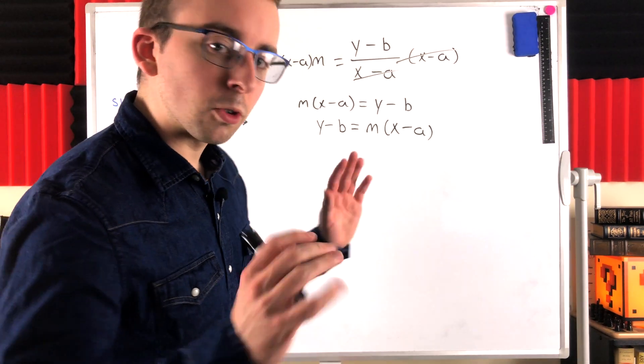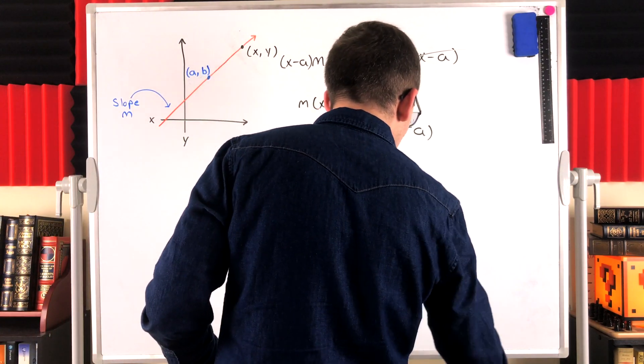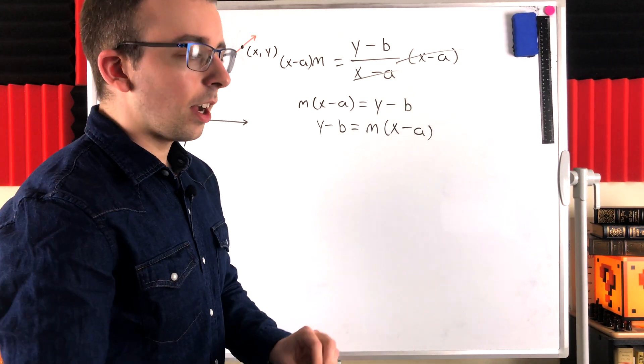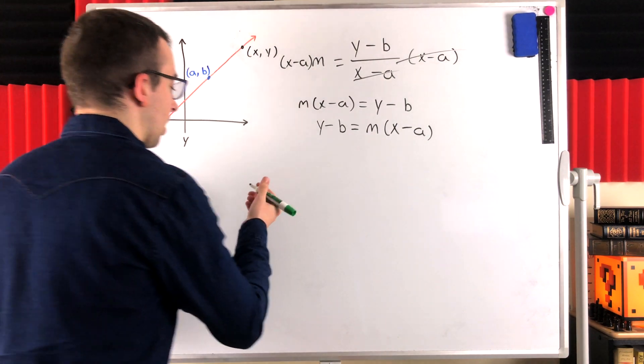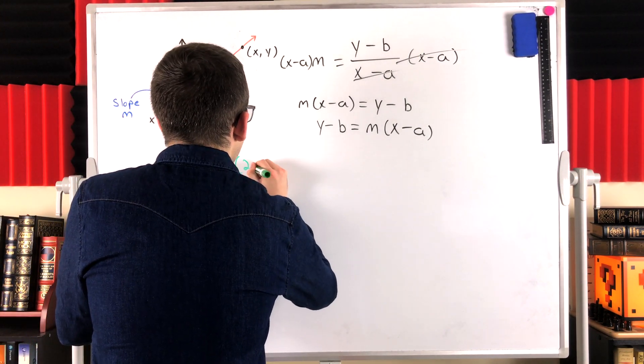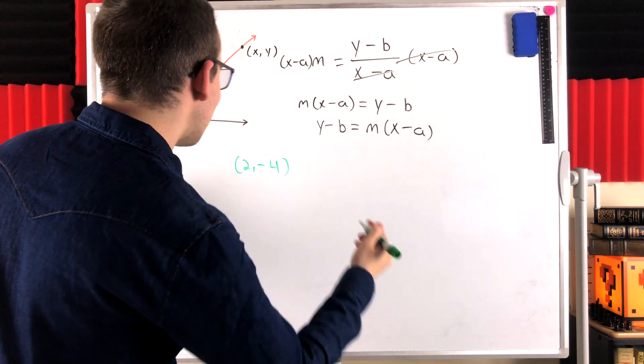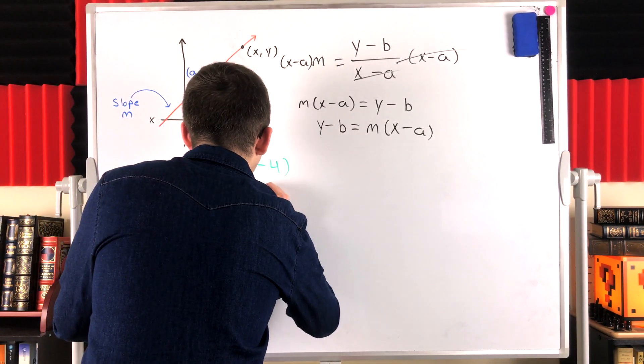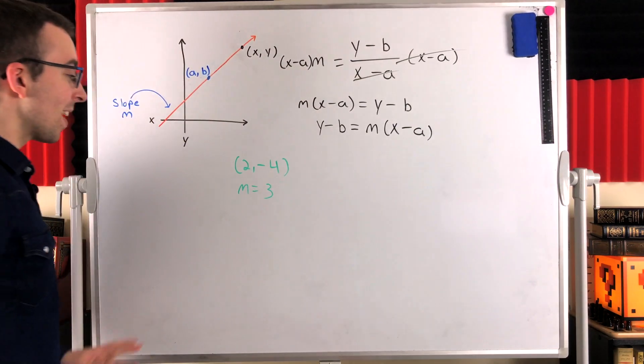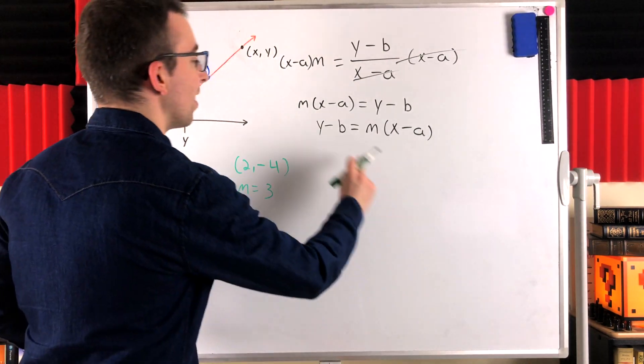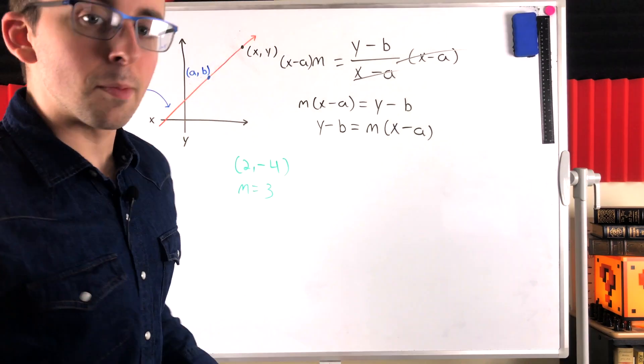Guess we'll write in green. Let's say that we are given a point on the line, we're given a point on the line is (2, -4). That's a point on our line. And let's say we're given that the slope of our line is 3. Then just with this information, we can immediately write an equation for the line using point-slope form.